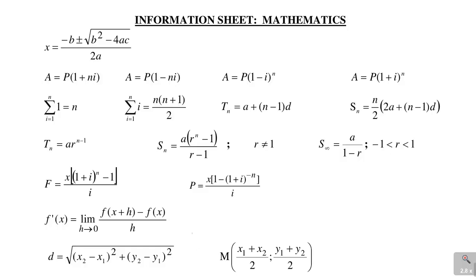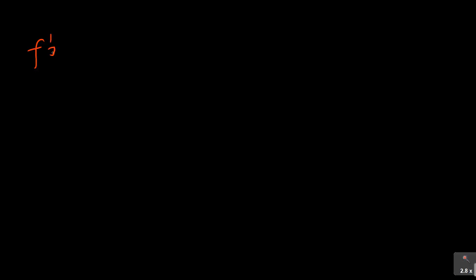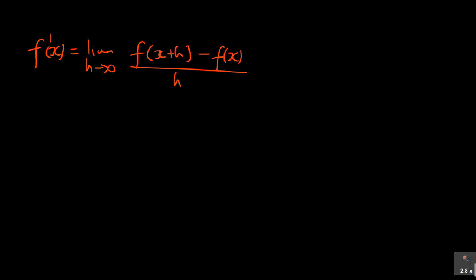Now let us use first principles. First things first, go to your formula sheet and identify the formula for performing first principles. That formula is: f prime x equals the limit as h approaches 0 of f(x plus h) minus f(x), all over h. So you want to write that formula: f prime x equals lim h→0 of [f(x+h) minus f(x)] over h.